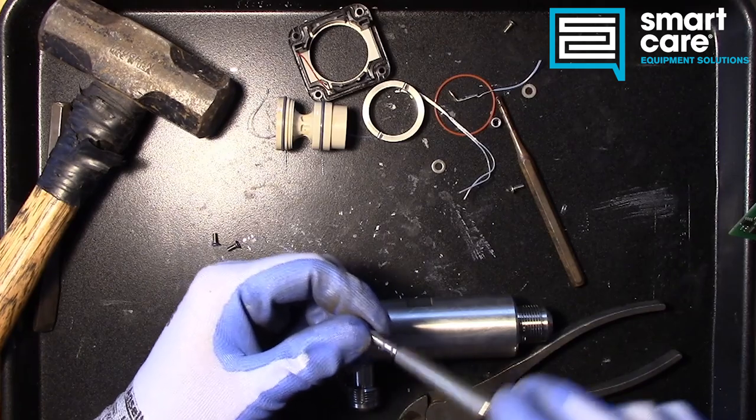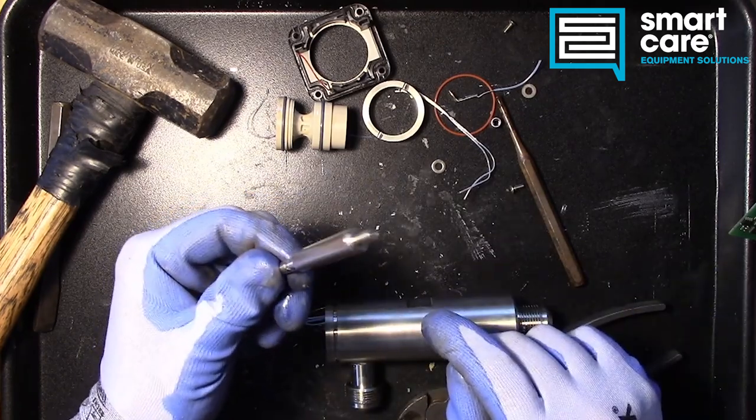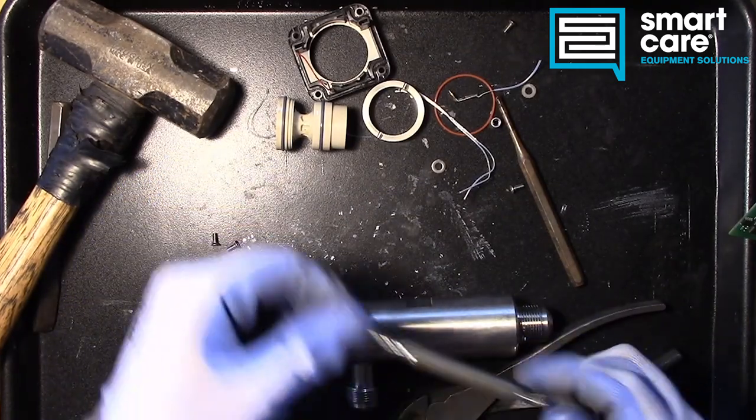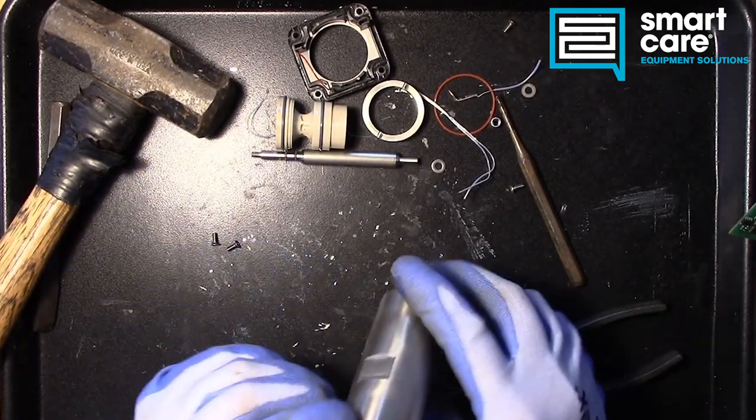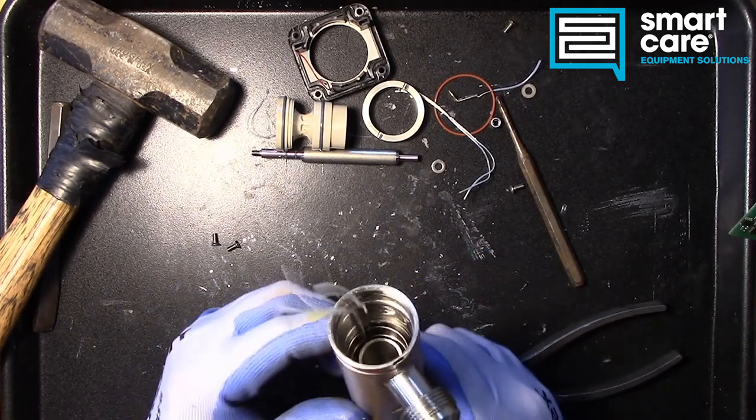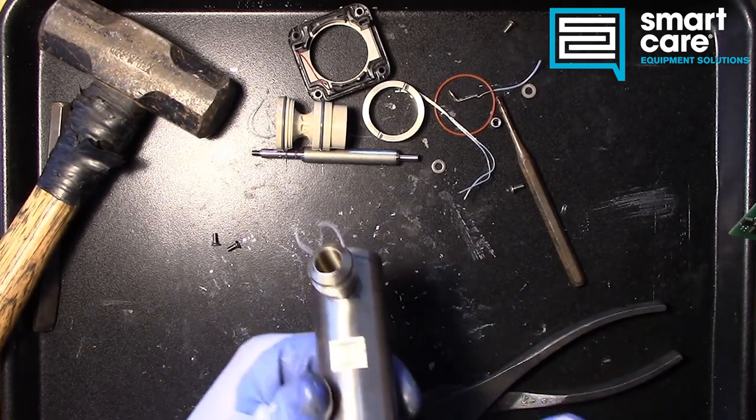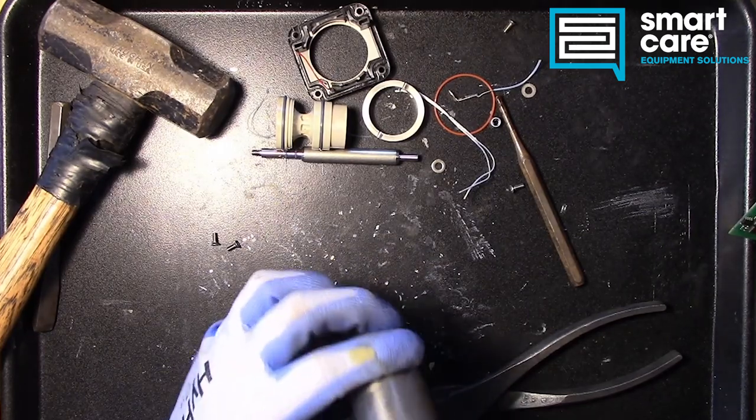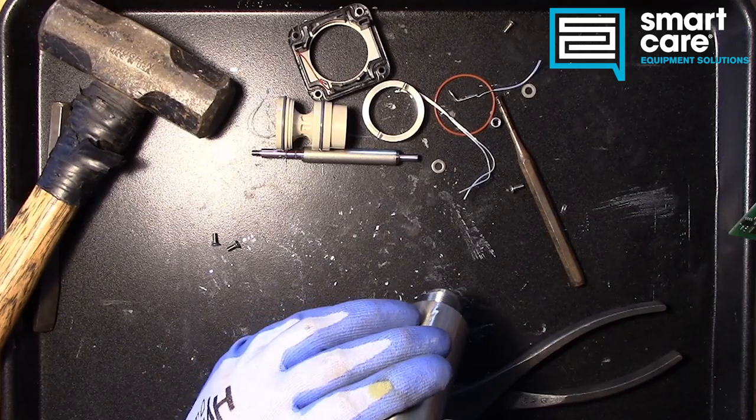So it looks like the correct way to take this apart would have been to pound this assembly out first. We'll come back to this because I kind of want to cut it apart and see what's inside it. So now, down inside here, we've got a barrel with a screen and some wires. Let's see what we have to do to get that out.